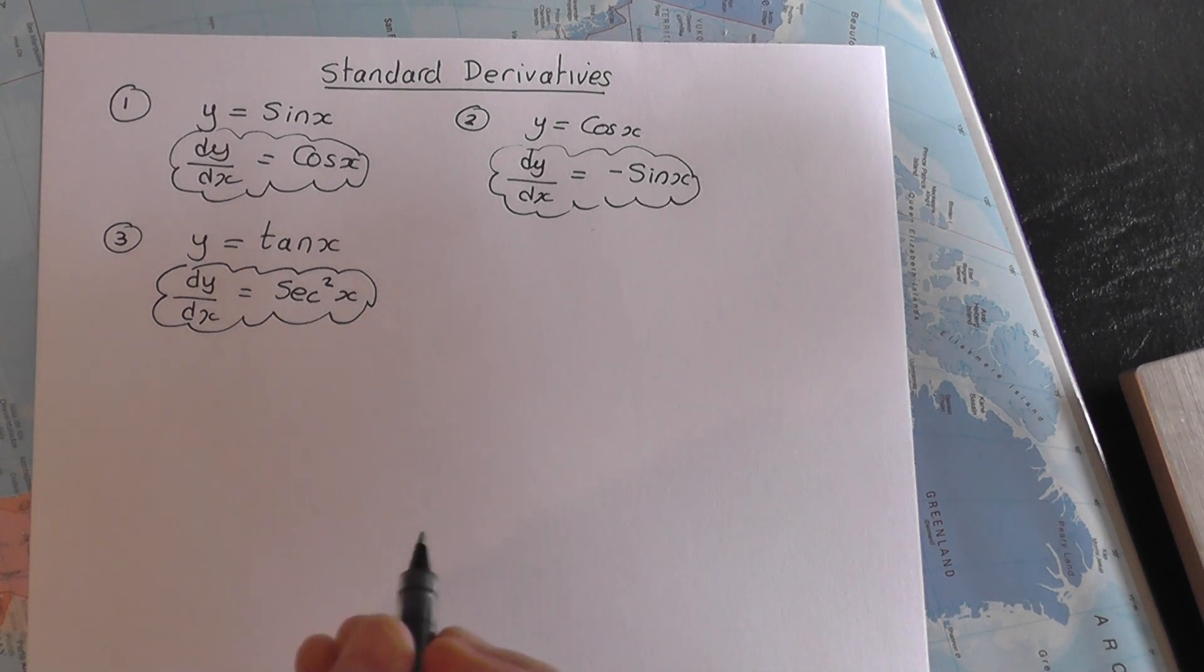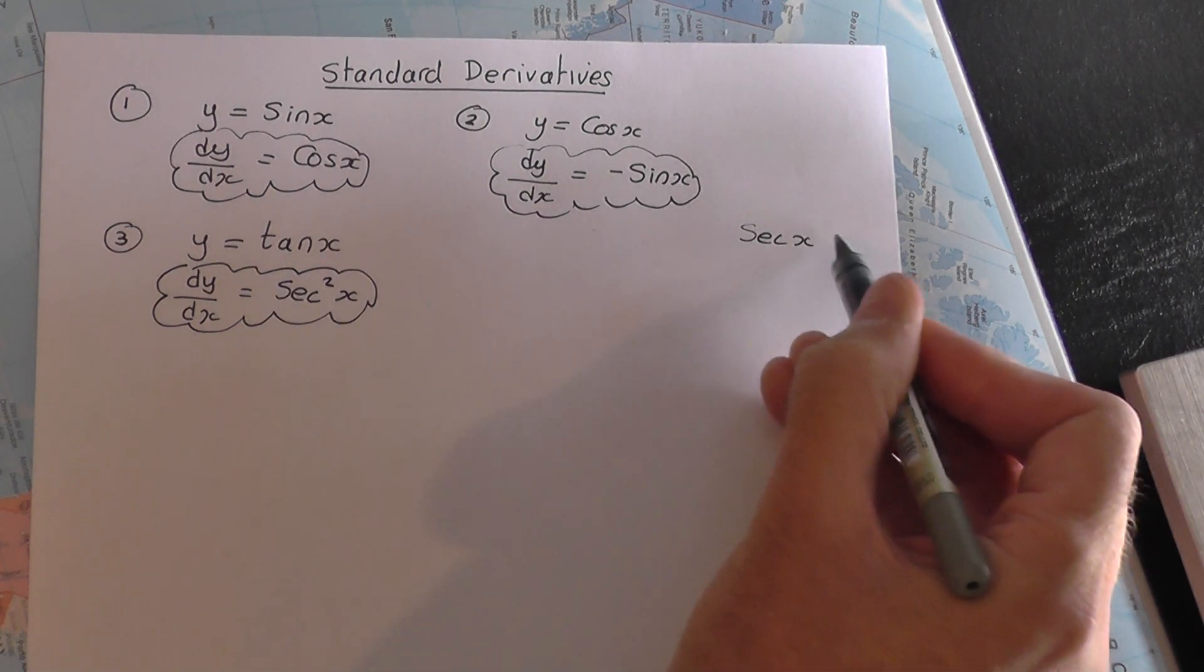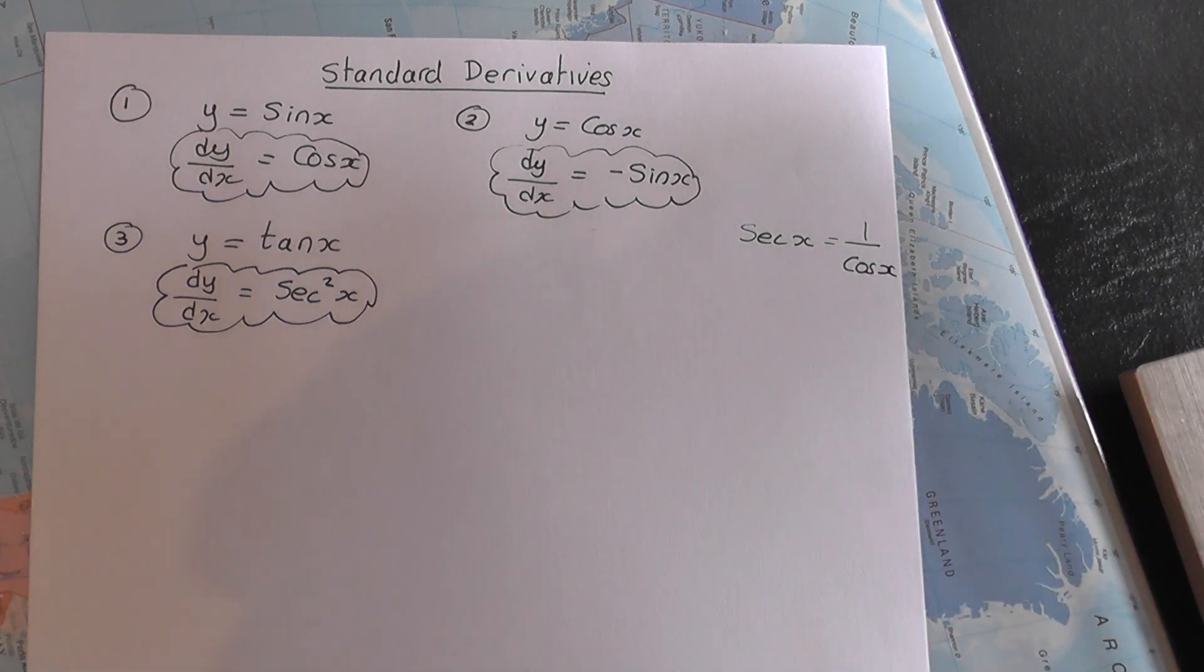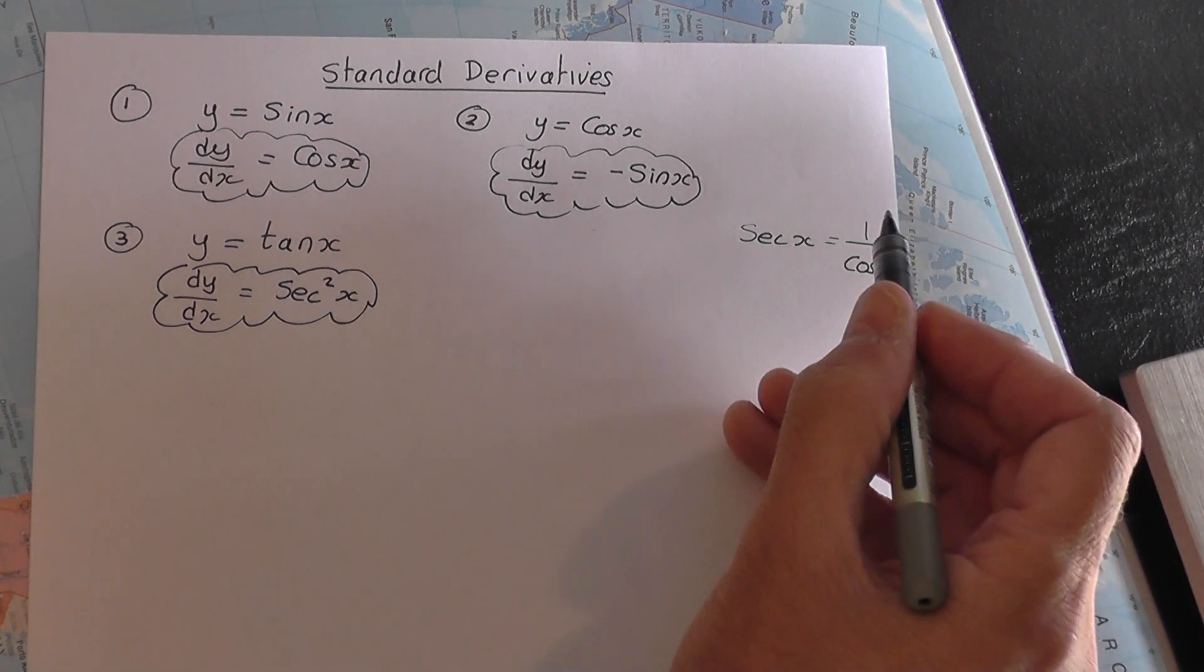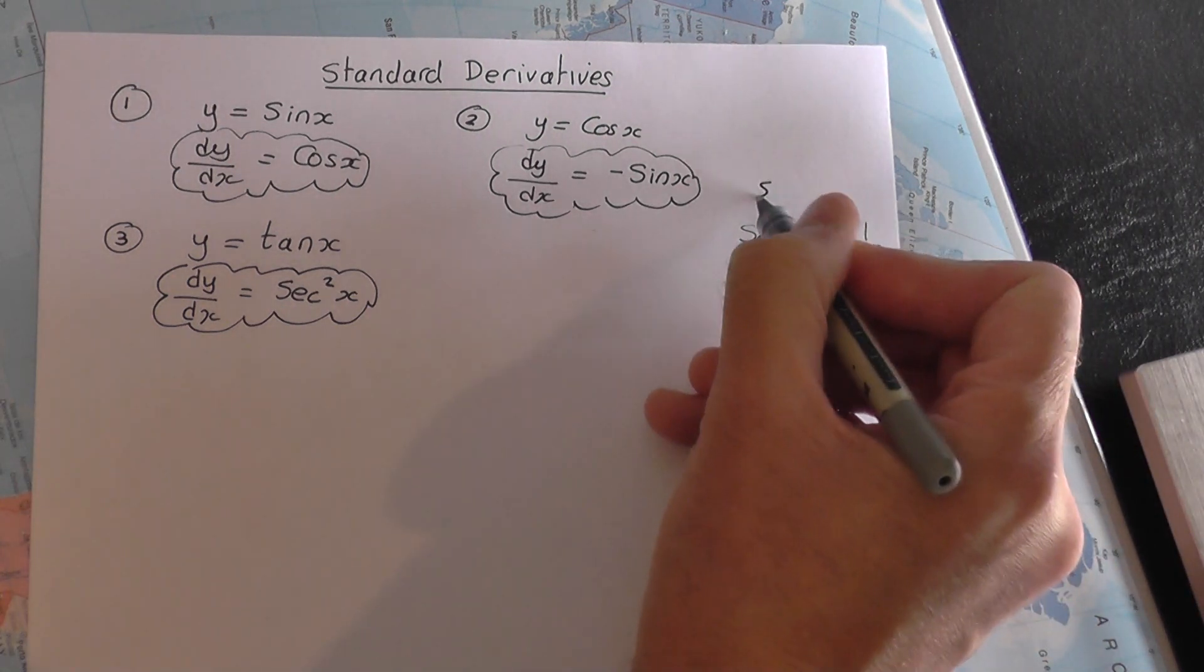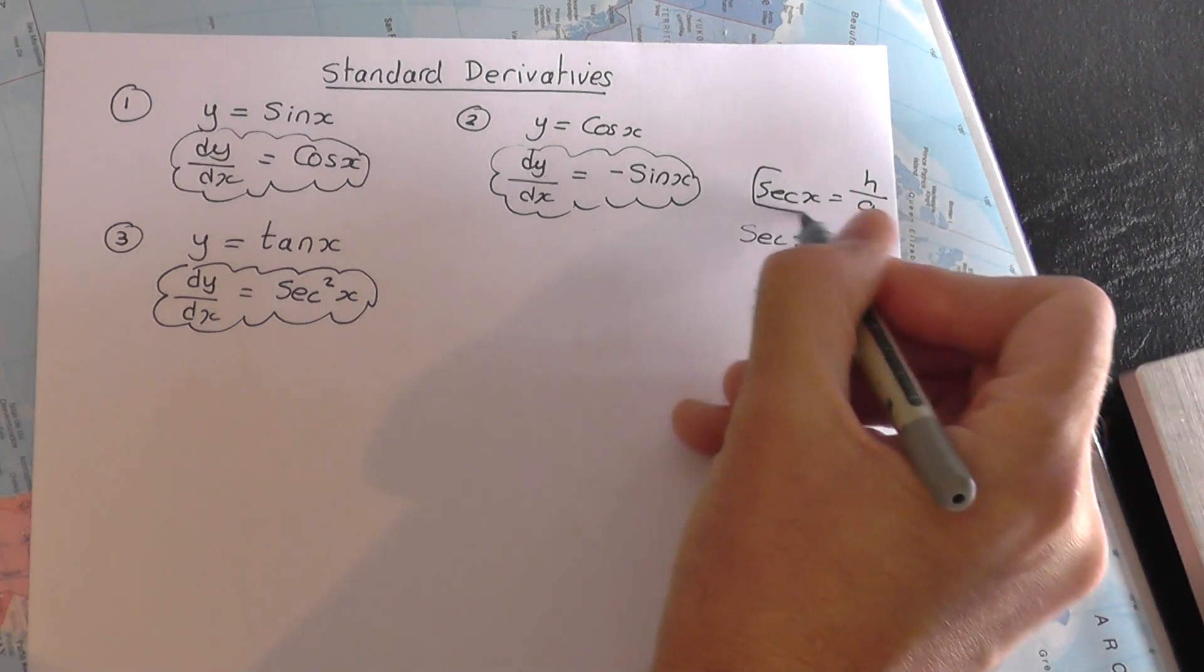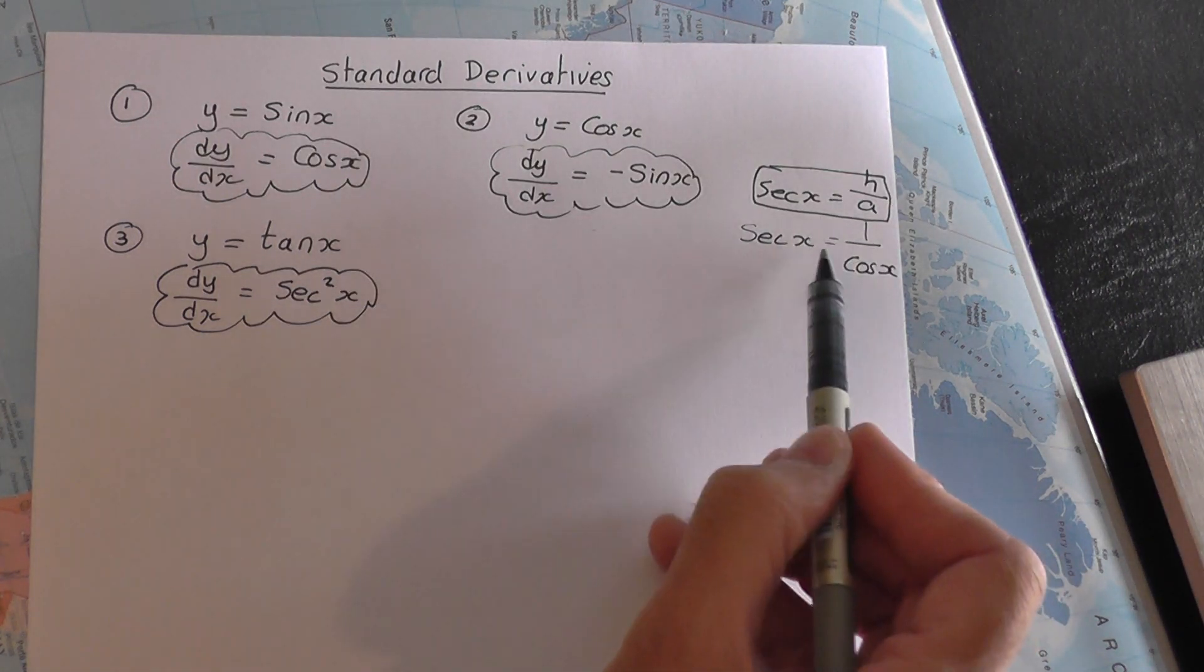You just learn that off by heart. Now you might say, what on earth is sec? Because we haven't done the trigonometry for year 13 yet. Sec x, it's very simple. Sec x is another trig term which is the same as the cos trig term upside down. So sec x is the same as one over cos x. In terms of a right angle triangle, remember cos x was adjacent over hypotenuse, so sec x is the same as hypotenuse over adjacent.